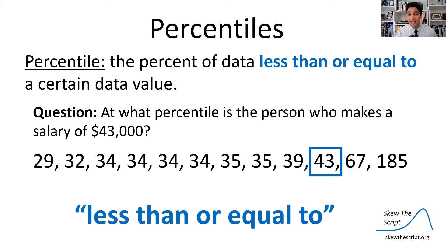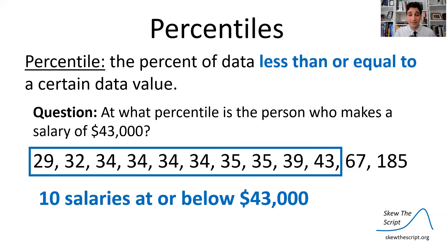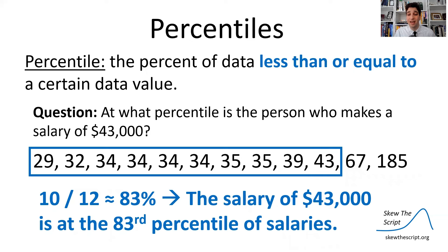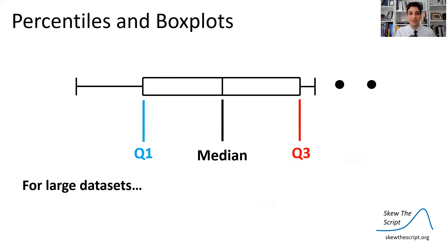We look at the percent of data that is less than or equal to $43,000. There are 10 salaries at or below $43,000, including that individual. So 10 out of 12 total salaries were at or below $43,000 — that's 83% of the salaries. The salary of $43,000 is at the 83rd percentile.